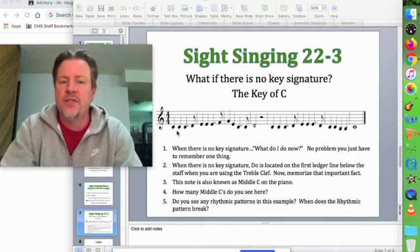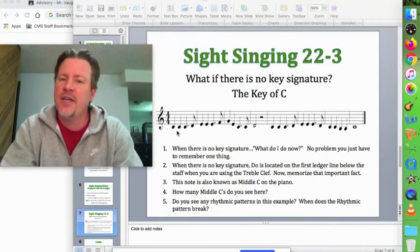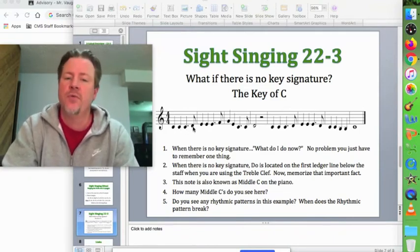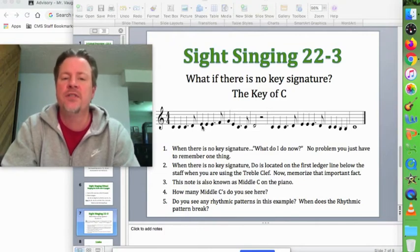That's how you find where DO is. And from that you can find any other note. So if this is DO, the next one up is RE, and then the next one up is MI, and then FA, and then SO, and so on and so forth.